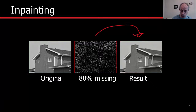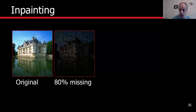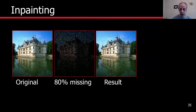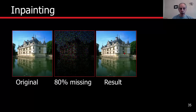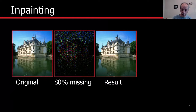We go from the corrupted image to this clean result — the original is just for reference. Let's see that in color: again 80% missing, and here is the reconstruction. For this example, we started with a dictionary learned from a database of natural images, then adapted it to this image for a few iterations. Then we reconstruct every patch and average for every pixel all the patches that touch it. A very impressive result, showing the power of this technique.